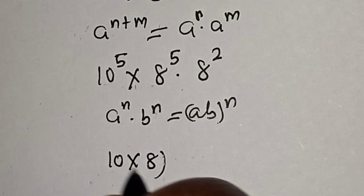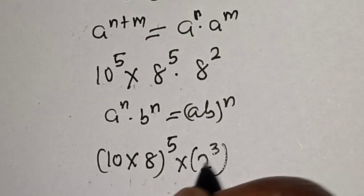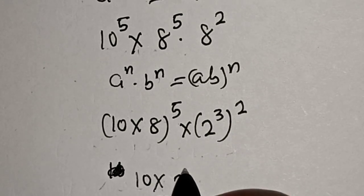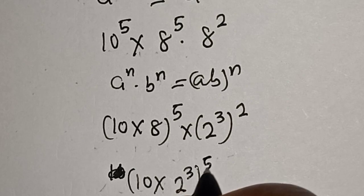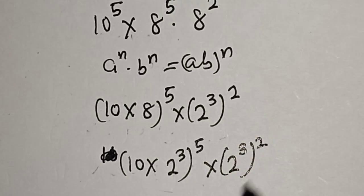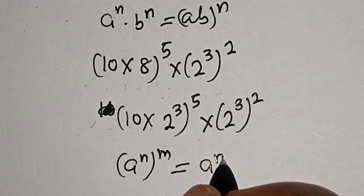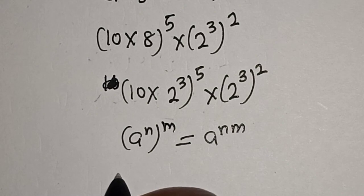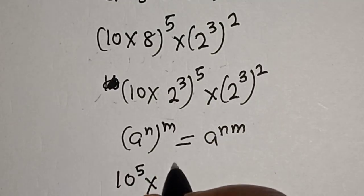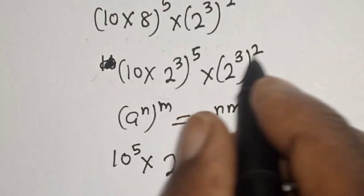Now this is 10 multiplied by 8, raised to power 5, then multiplied by 2 raised to power 3, raised to power 2. This is 10 times 2 raised to power 3, all raised to power 5, multiplied by 2 raised to power 3 raised to power 2. This gives us 2 raised to power 3 times 5, that is 15, multiplied by 2 raised to power 3 times 2, that is 6.